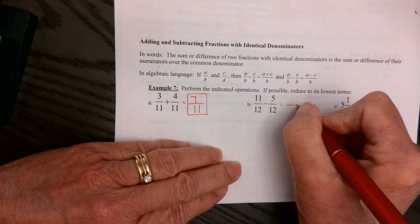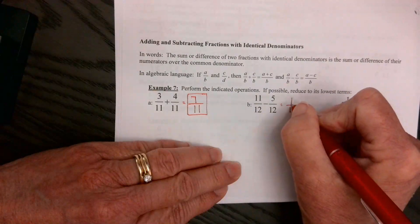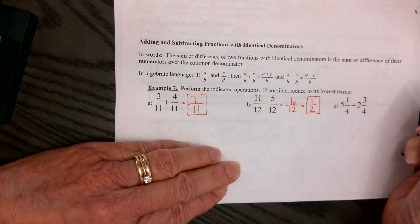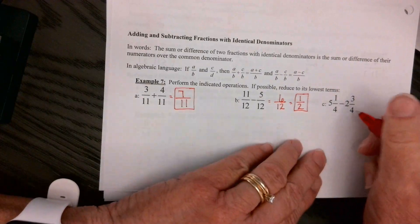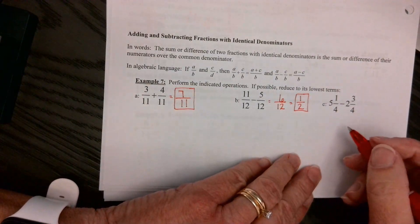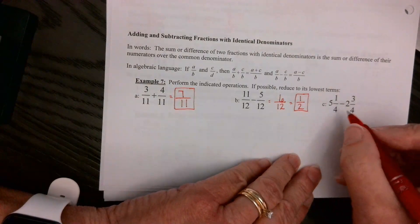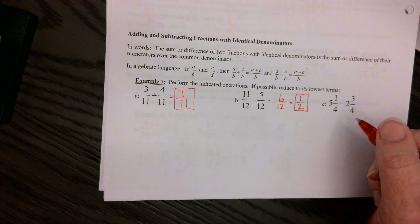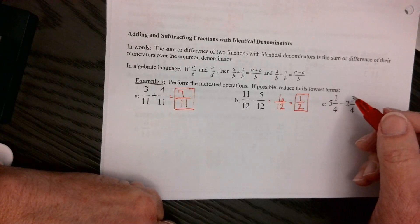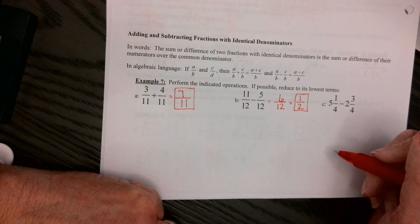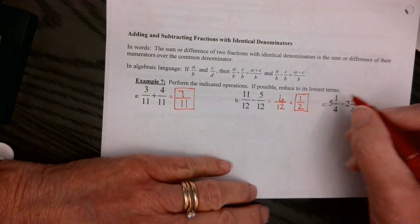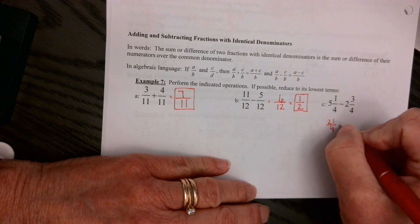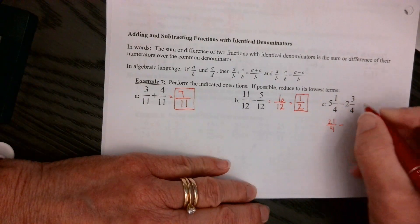Right here, denominator is 12. 11 minus 5 gives us 6, and that reduces to 1/2. Right here. This one is a little bit harder, okay? And here's why. Well, actually, I think the way they teach it now in elementary school is they have you change it to mixed numerals. Okay, I didn't learn it that... I mean, an improper fraction. I just use mixed numerals, but then you have to borrow. So here, let's change it. 4 times 5 is 20, plus 1 is 21 over 4, minus 4 times 2 is 8, plus 3 is 11 over 4.